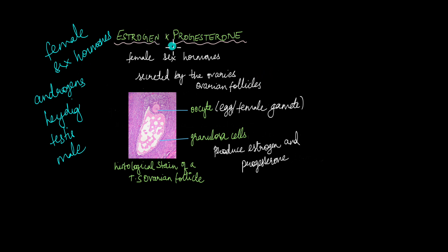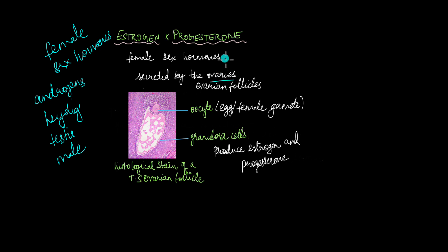When we talk about estrogen and progesterone, they are secreted by the cells in the ovaries. Females have a pair of ovaries, a pair of fallopian tubes, and a uterus as part of their sexual reproductive system. It is at the ovaries where estrogen and progesterone are produced. Apart from producing estrogen and progesterone, the ovaries are also responsible for the formation of the female gamete, which is known as the oocyte or the egg.